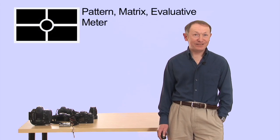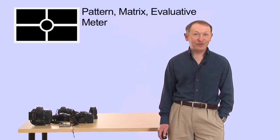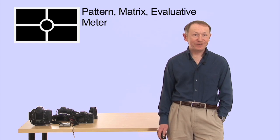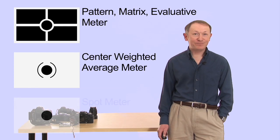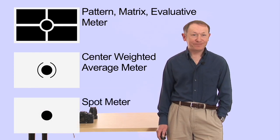Now let's have a look at a light meter. Most cameras have three different types of light meter, some even have four. The most common types of light meter are a pattern meter, sometimes known as a matrix meter or an evaluative meter. Next, we have a center-weighted average meter. And finally, we have a spot or partial meter.